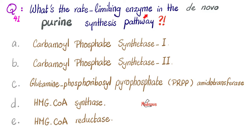What is the rate-limiting enzyme in the de novo purine synthesis pathway? Is it A, CPS1; B, CPS2; C, glutamine-phosphoribosylpyrophosphate-amidotransferase — God bless it; D, HMG-CoA synthase; or E, HMG-CoA reductase? Please pause.